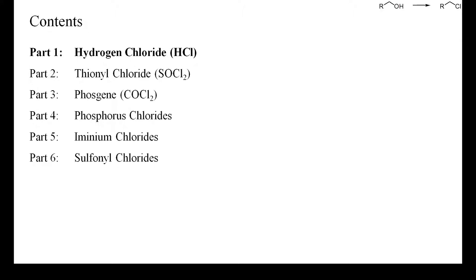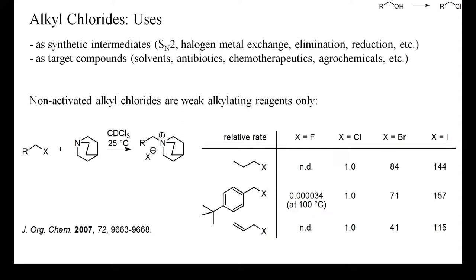The conversion of alcohols into chlorides is an important transformation, because alcohols are readily available but can usually not be used as alkylating reagents. The corresponding alkyl chlorides, though, are electrophilic alkylating reagents and can be used to alkylate a broad variety of nucleophiles.